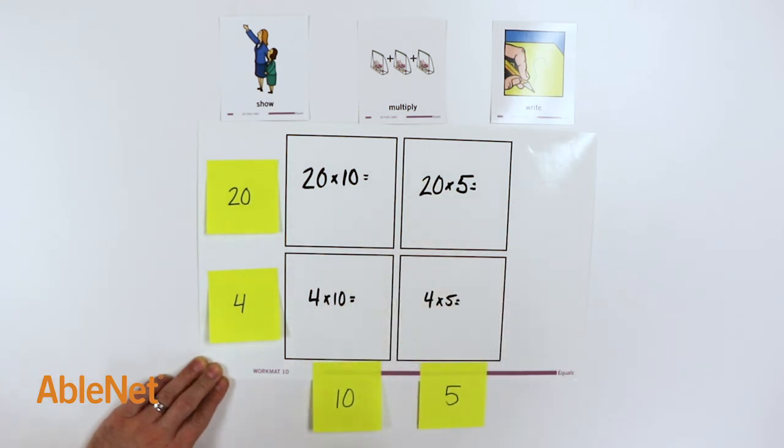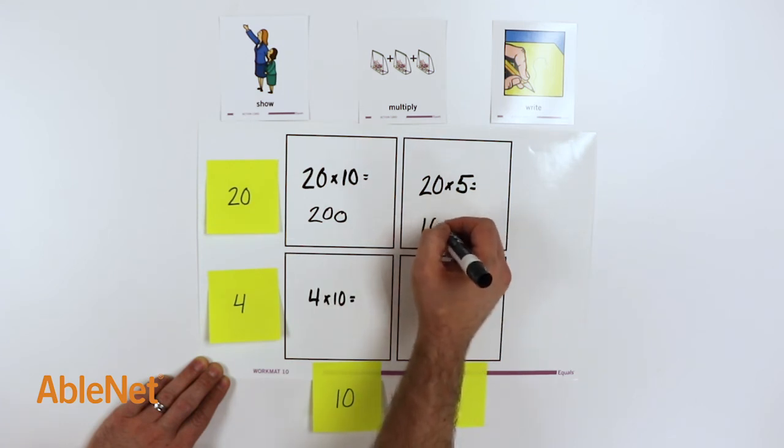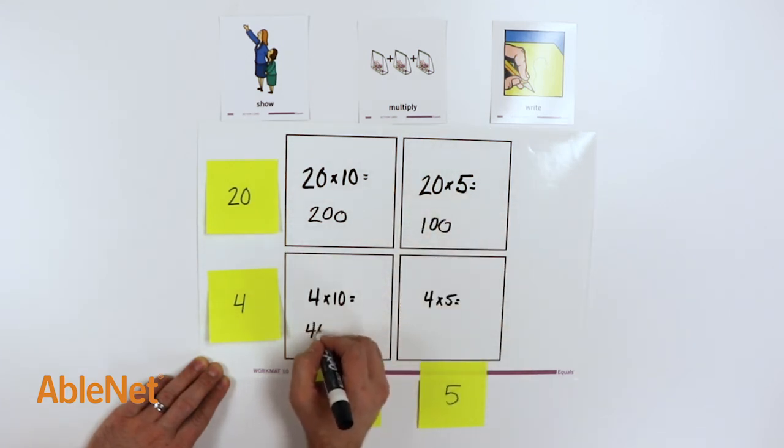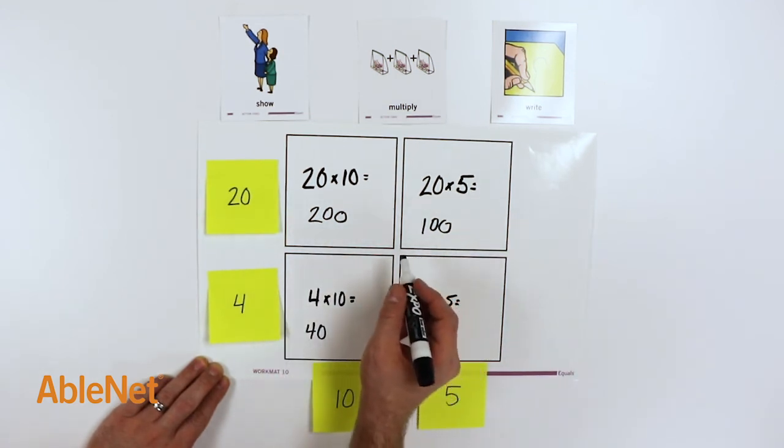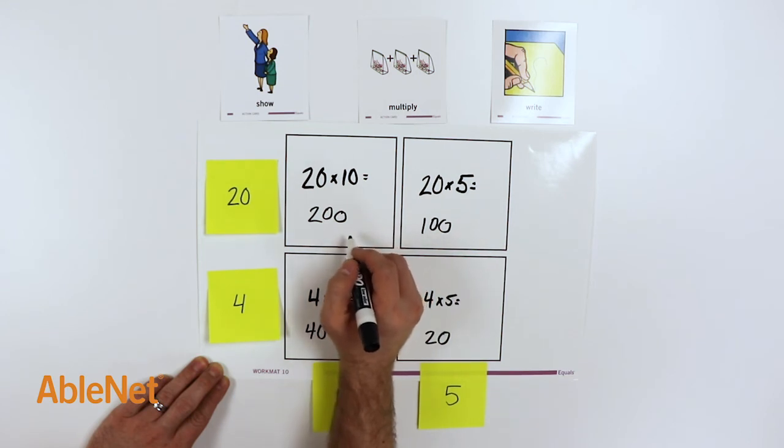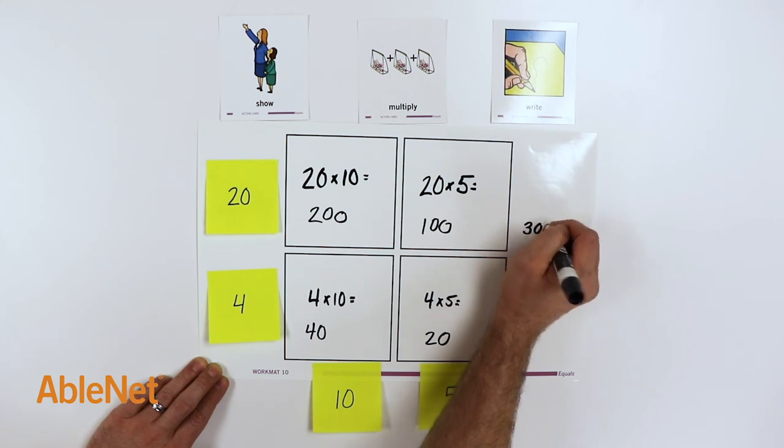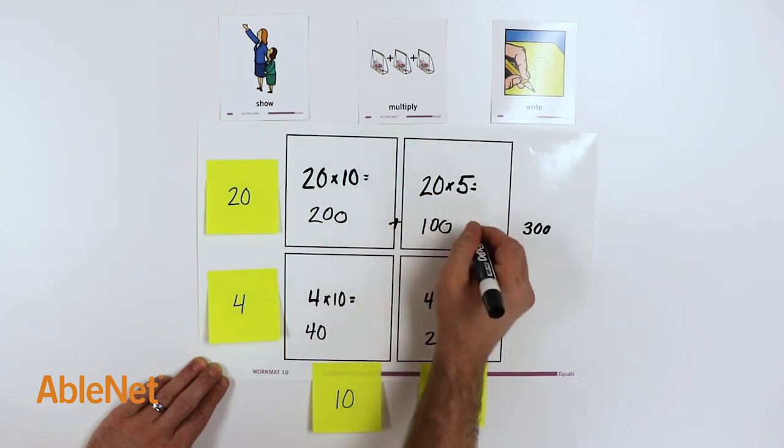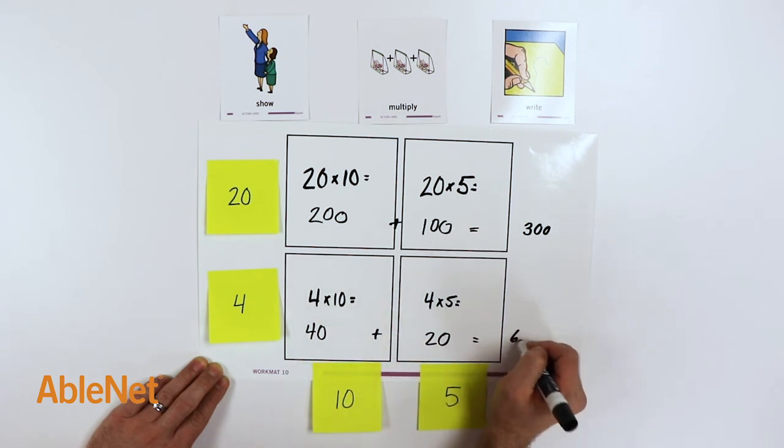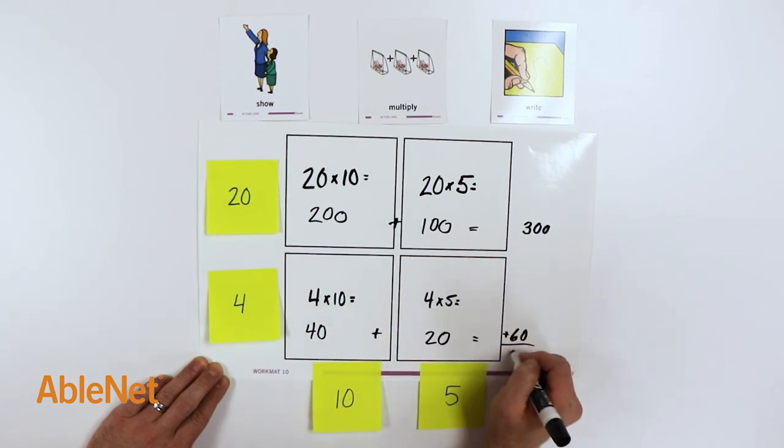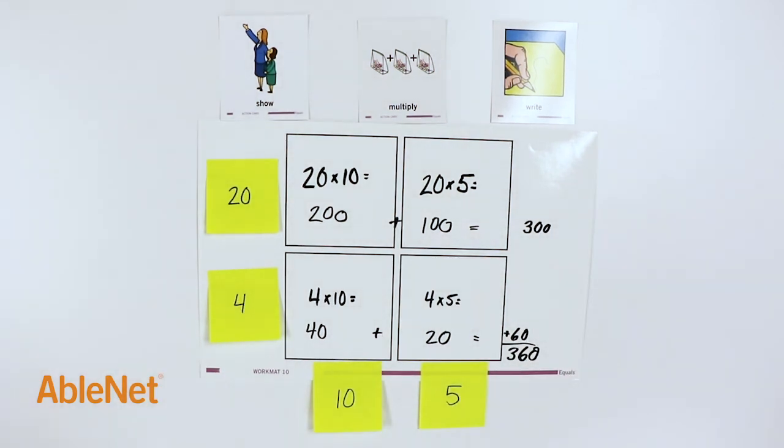Now we can multiply. 20 times 10 is 200. 20 times 5 is 100. 4 times 10 is 40. And 4 times 5 is 20. Now we can add those up. 200 plus 100 is 300. Next we can add the bottom row. 40 plus 20 is 60. So we have 300 plus 60 is 360. So Jasmine needs 360 pieces of candy.